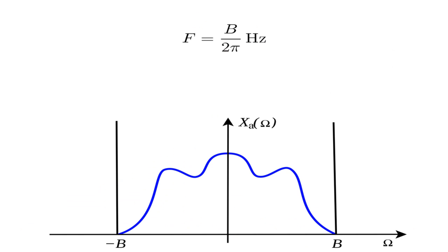When we have a signal that is band-limited to B radians per second, or F hertz, we can perfectly recreate the original analog signal if the sampling frequency is high enough. Specifically, we can recreate the analog signal if the sampling frequency, F sub S, is greater than 2F.